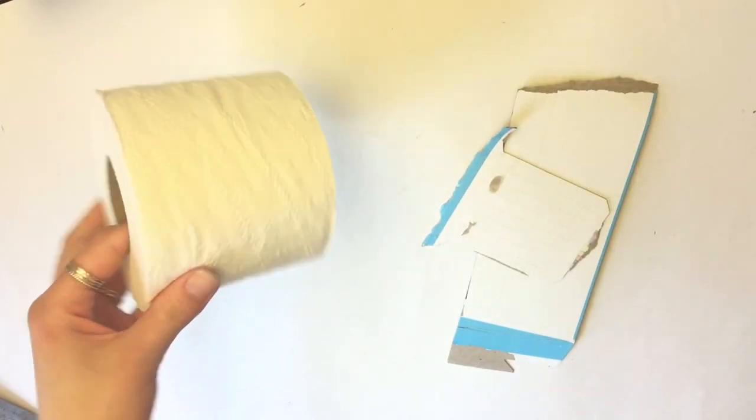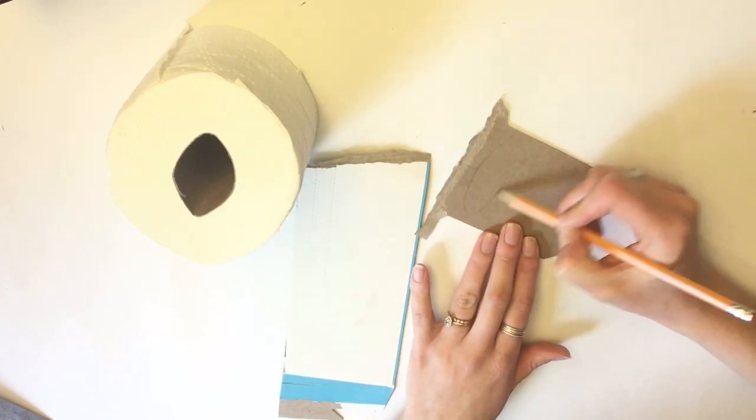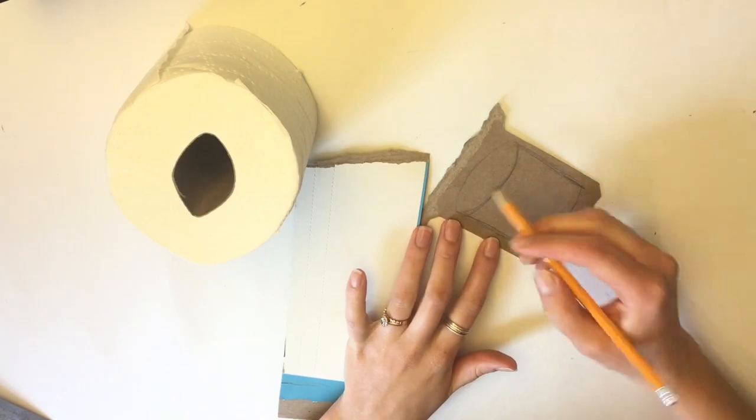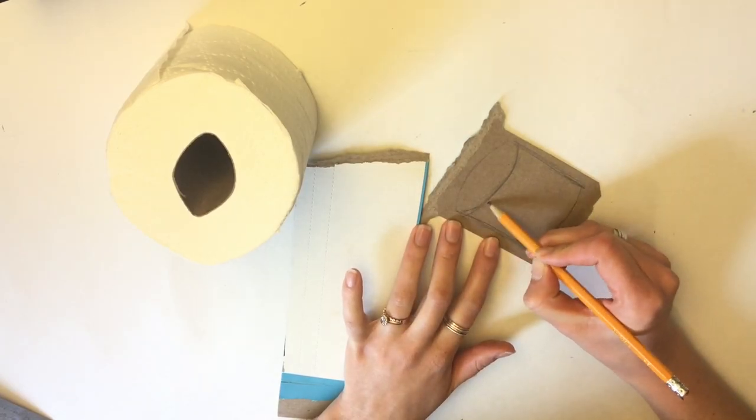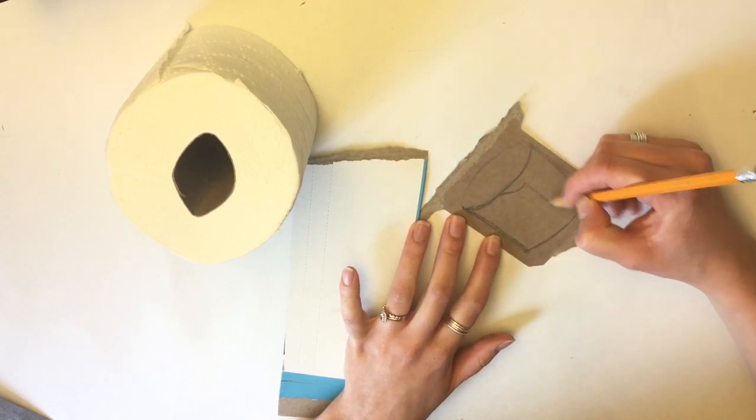After cutting out your rectangular background, start drawing the roll of toilet paper. I start with an oval shape, connect the sides, and mirror that curved line for the bottom. Draw a wavy line on the top and bottom to create a sheet of toilet paper.